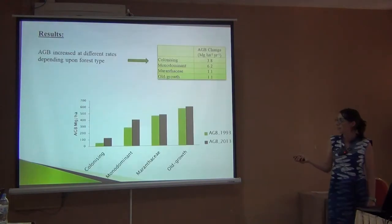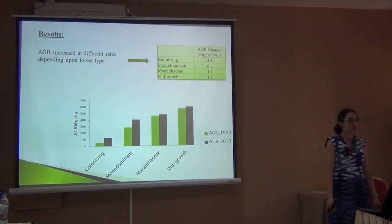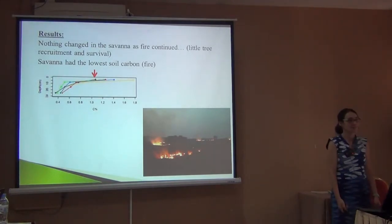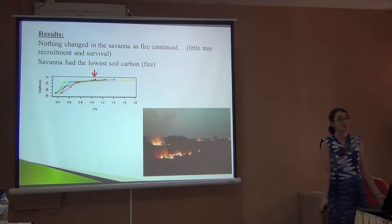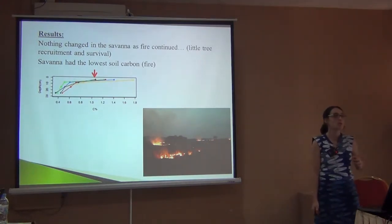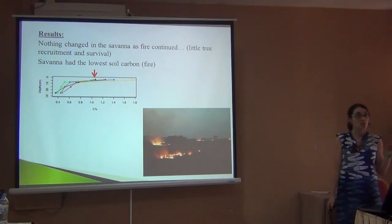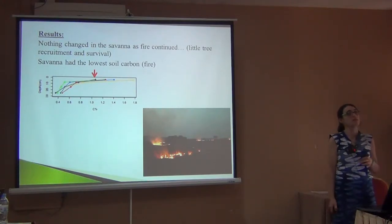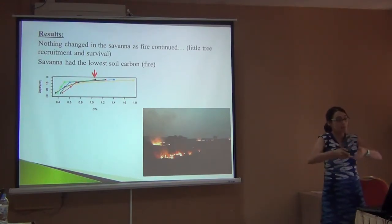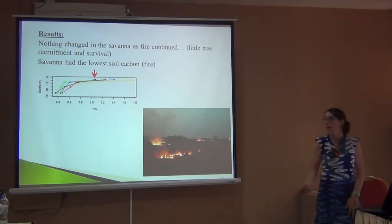The question is: what happened to the savanna? Because in the figure, savanna is not there. If you don't stop fire, it doesn't change, because trees cannot grow, so they cannot accumulate biomass. In 20 years, no tree made it to 10 centimeters — I only measured trees above 10 centimeters. It's really hard in the beginning of this succession. Fire has a huge role to play; if you don't stop fire, it's very hard for these trees to grow, establish themselves, and survive.